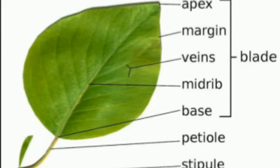Examples of stipules include rose and hibiscus leaves. The broad, green and flat surface of the leaf is called leaf blade or leaf lamina. The tip of the leaf blade is called leaf apex.